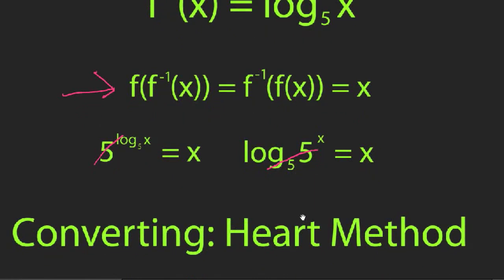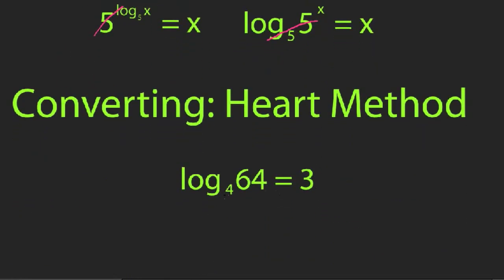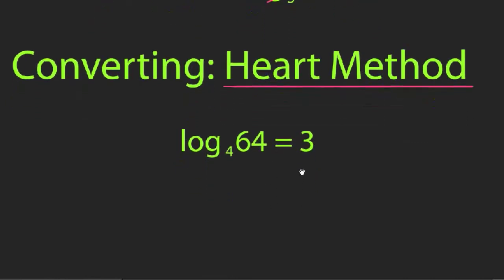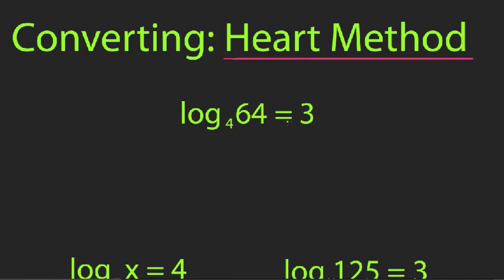So maybe you've never seen logs before and when you see something like log base 4 of 64 equals 3 you have no idea what that means. Well there's this cute little trick called the Heart method which lets you convert a logarithmic expression or equation into the equivalent exponential equation. So log base 4 of 64 equals 3, the way you convert this into an exponential equation is like so. You say 4 to the 3rd power, so the base of the log raised to the right side of the equation equals 64. So 4 to the 3rd equals 64. You see how we've drawn a heart here? So this is the equivalent exponential equation.